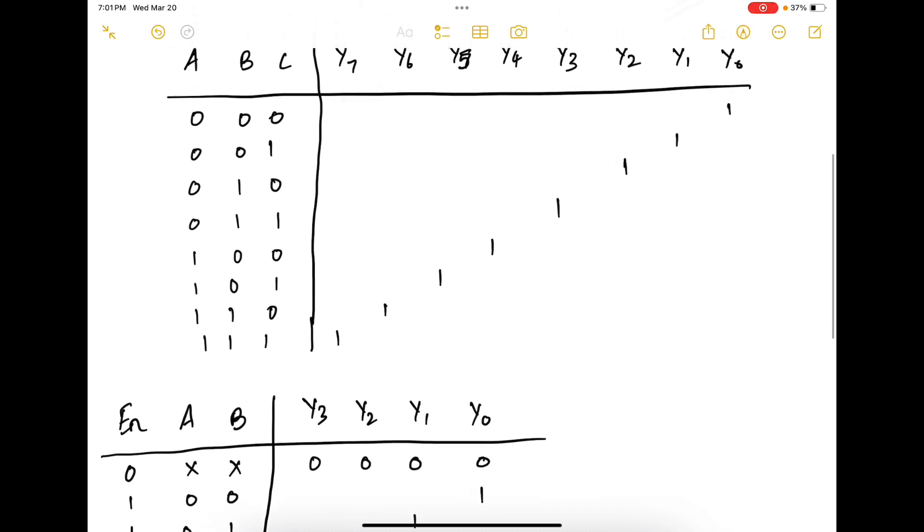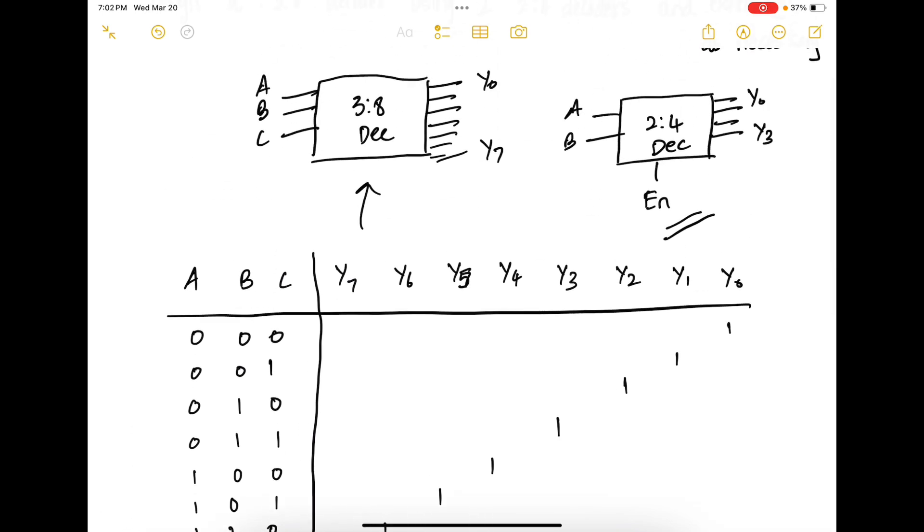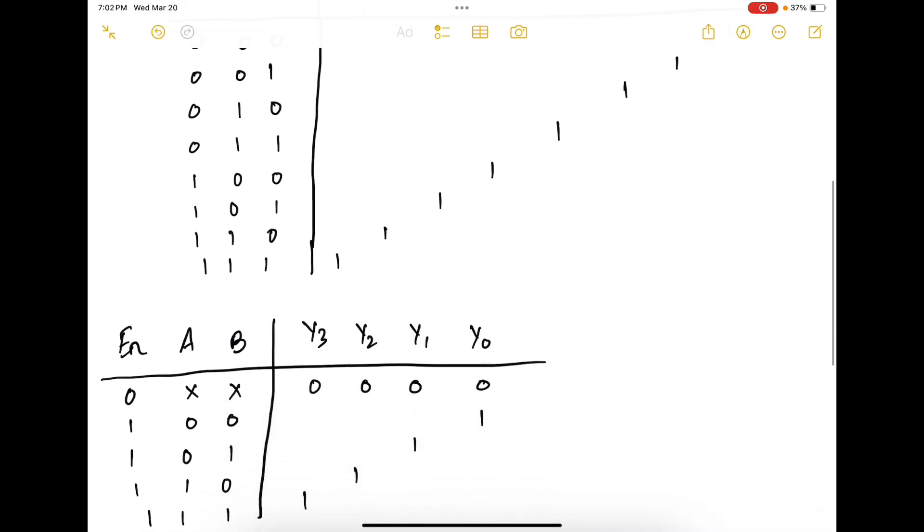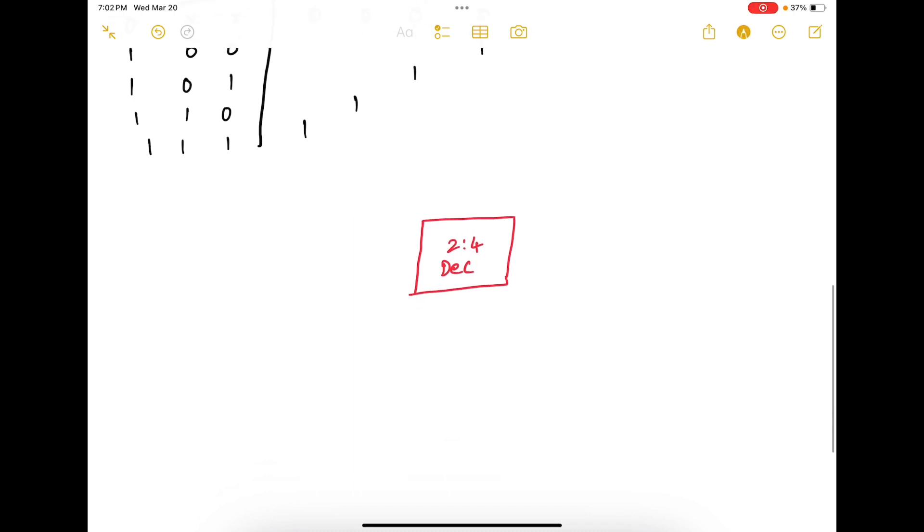Now to make the design, first you need to understand you can use only two 2-to-4 decoders. So here is what I am going to do. Let us assume that this is the first 2-to-4 decoder and this is the second 2-to-4 decoder.